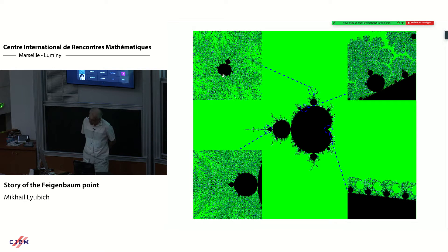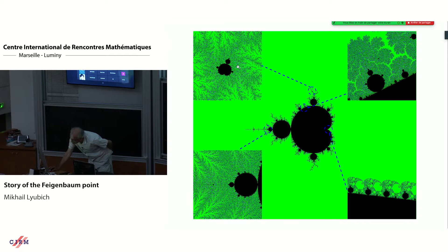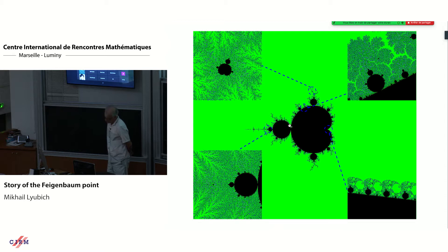This cusp is the indication that this copy is a so-called primitive copy - it is not attached to any other component of the Mandelbrot set, but just comes from nowhere. Unlike this satellite copy, which is attached to the main cardioid of the Mandelbrot set. There are other very famous places of self-similarity of the Mandelbrot set of different nature.